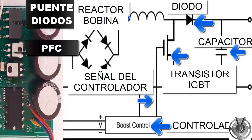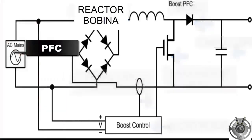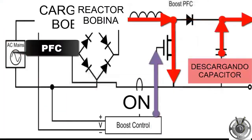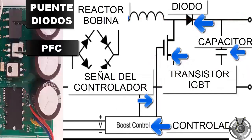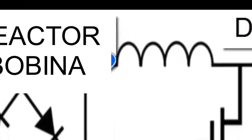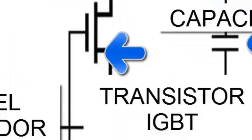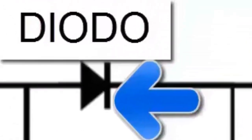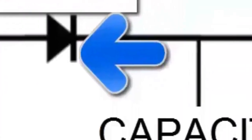The PFC circuit is composed of a reactor, an IGBT transistor, a recovery diode, and stabilization capacitors. The IGBT transistor is activated and deactivated rapidly thanks to the action of the controller.